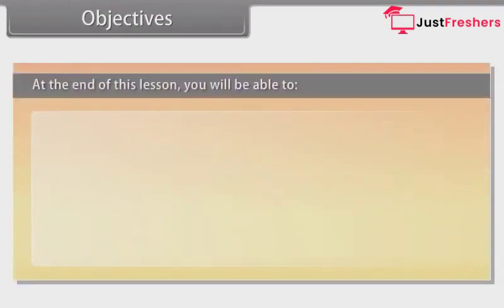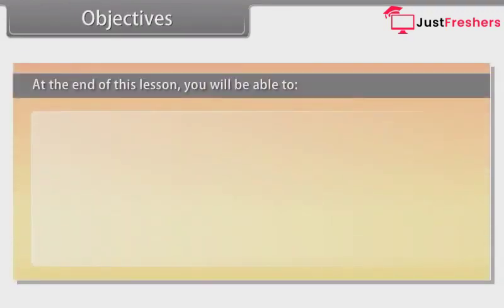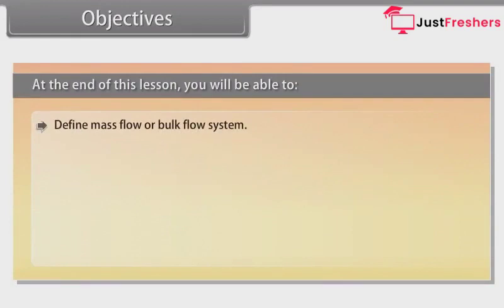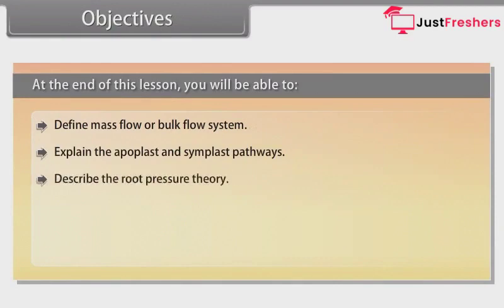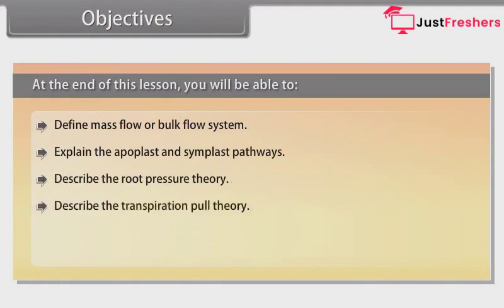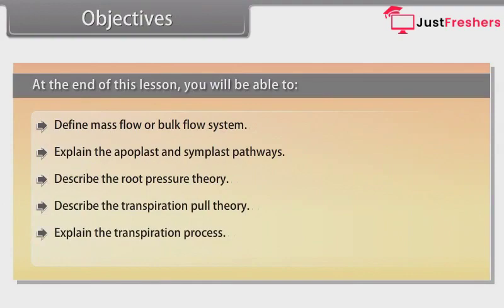At the end of this lesson, you will be able to: define mass flow or bulk flow system; explain the apoplast and symplast pathways; describe the root pressure theory; describe the transpiration pull theory; and explain the transpiration process.